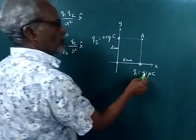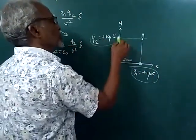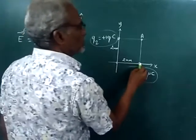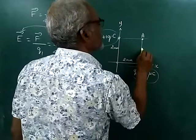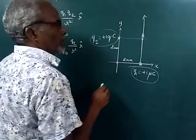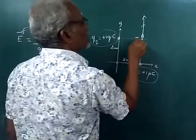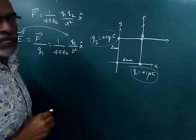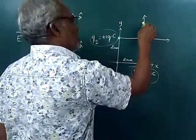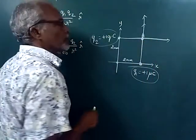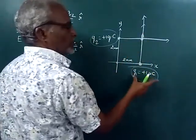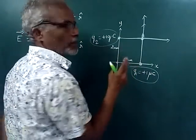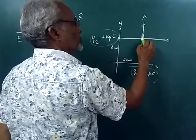We can see that both are positive charges — q1 is plus 1 micro Coulomb and q2 is plus 1 micro Coulomb. Both are on the x-axis and y-axis respectively, and the distance from the origin is the same for both. So the charge will act in this direction. The electric field produced by each charge is the same magnitude, because the distance is the same.